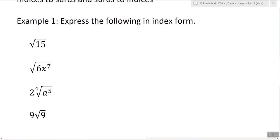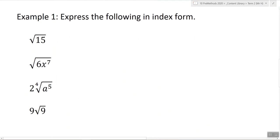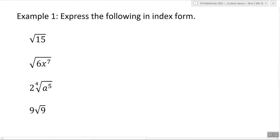So we're going to be doing indices to surds and surds to indices. So copy down the first example. So the square root of 15 as an indice using the law we just learnt. Any ideas?